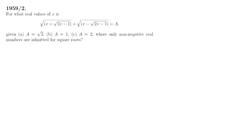Welcome to Math Memo, this is 1959 IMO problem number 2. We're asked to find the real values of x to satisfy this particular equation for these three cases of A, with the condition that only non-negative real numbers are admissible for square roots.